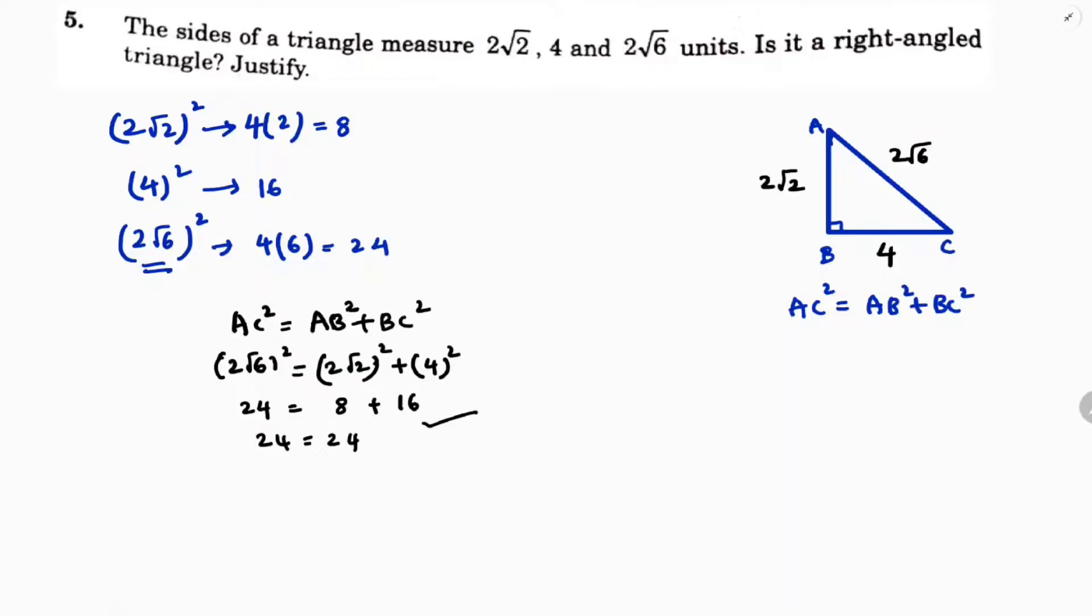According to converse of Pythagorean theorem, in a triangle, if square of one side is equal to the sum of the squares of other two sides, then the angle opposite to the first side is right angle. So here, angle B is 90 degrees.